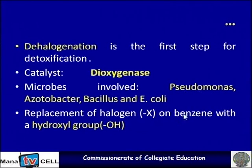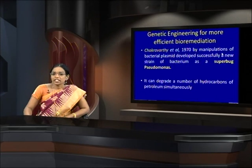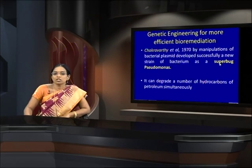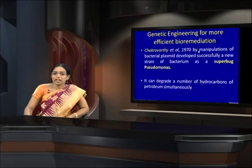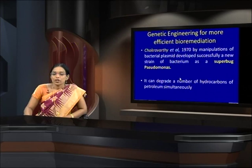Replacement of the halogen on benzene with a hydroxyl group is dehalogenation. In genetic engineering, we have biostimulation and bio-augmentation; in bio-augmentation, manipulation of genes takes place. Genetic engineering plays an important role for more efficient bioremediation. Chakravarti and co-workers in 1970 manipulated bacterial plasmids and developed a new strain called the superbug Pseudomonas, which can degrade a number of petroleum hydrocarbons simultaneously.